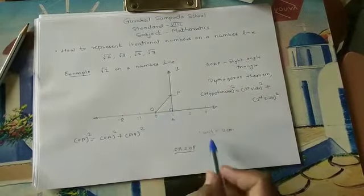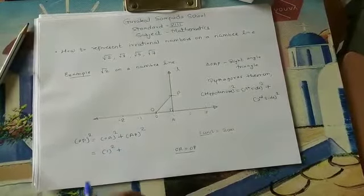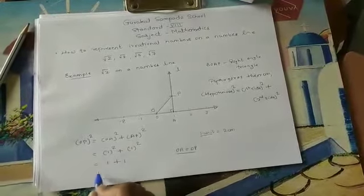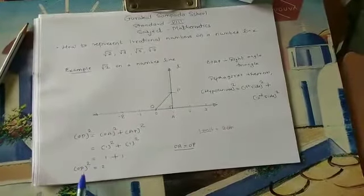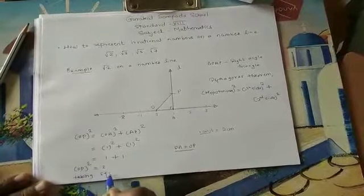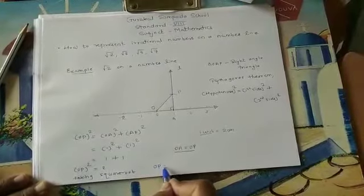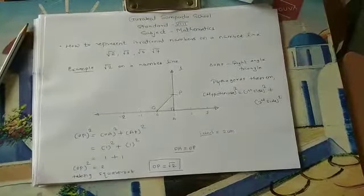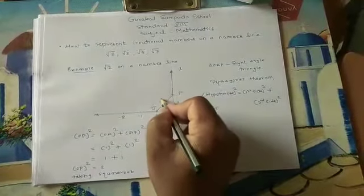We consider OA and AP each as 1 unit. Substituting: OP² = 1² + 1² = 1 + 1 = 2. So OP² = 2. Taking the square root, OP = √2. So the value of OA is 1 unit, AP is 1 unit, and OP is root 2.